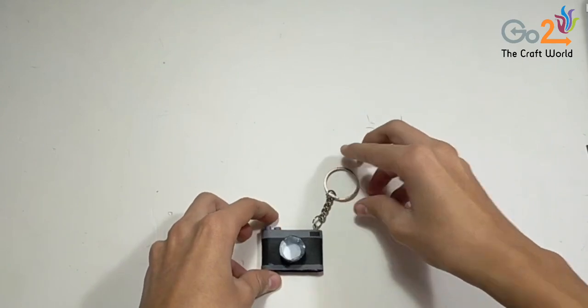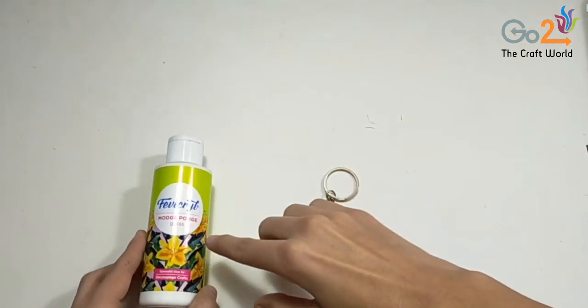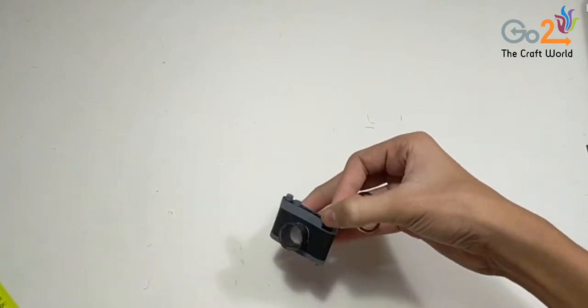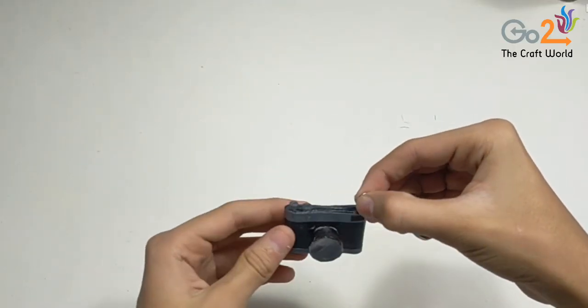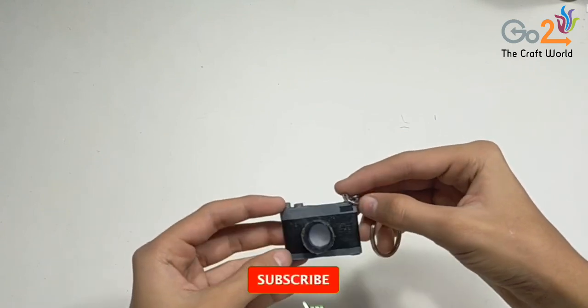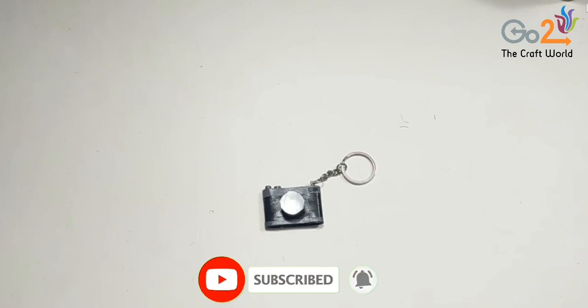So now if you want, you can add a layer of mod podge, that is a quilling shiner. This is totally optional. So it will look like this after applying mod podge or quilling shiner. So guys, here is the end of our video. If you like my ideas, do subscribe to my channel, like this video, and share my video. Thank you for watching.